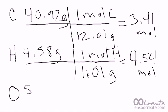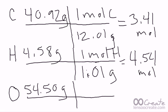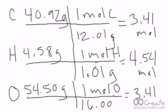I come down here, I do my oxygen. I'm going to get, we had 54.50 grams. That came from the percent by mass. We assumed 100 grams. And I have one mole of oxygen. And the oxygen is 16.00, approximately, from the periodic table. And when I get that, I get 3.41 moles.